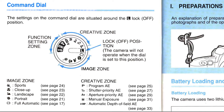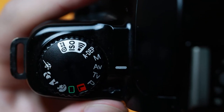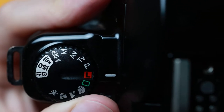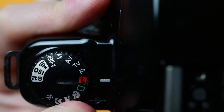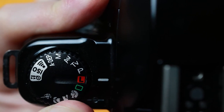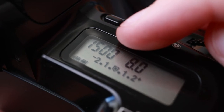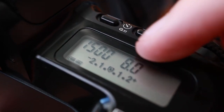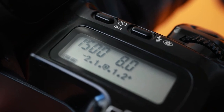Manual settings — creative zones. The EOS 500 separates the more advanced modes from the auto modes with a red L that stands for lock, or in other words, a glorified off position. We'll go over how to control each exposure setting individually in a moment, but first we'll go over the creative modes available.